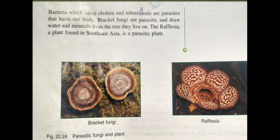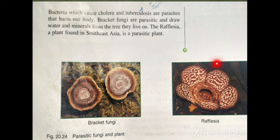Similarly, Rafflesia is a flower found in South East Asia that is a parasitic plant. It has no roots, leaves, or stem of its own. It grows inside another plant, and the only visible external part is its flower. Since it has no root, stem, or leaf, it depends entirely on another plant — so it is an endoparasite.